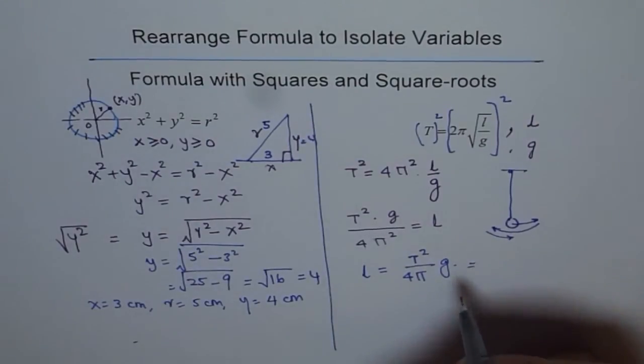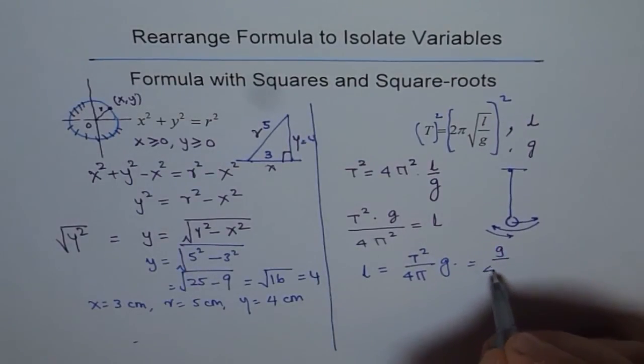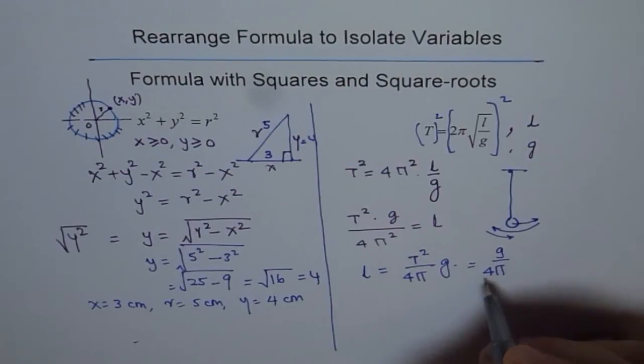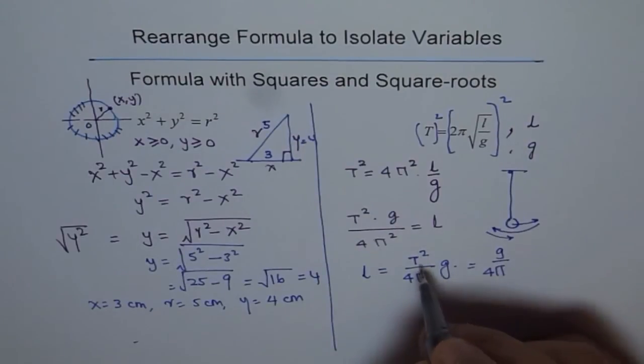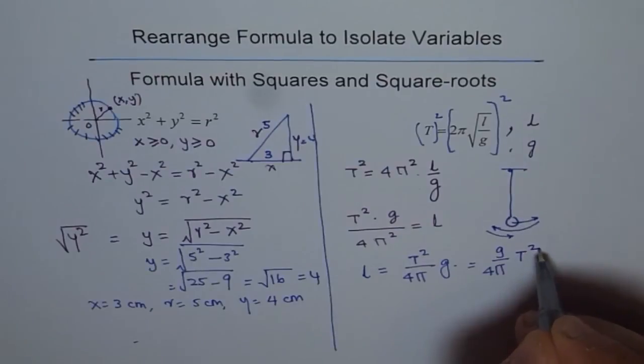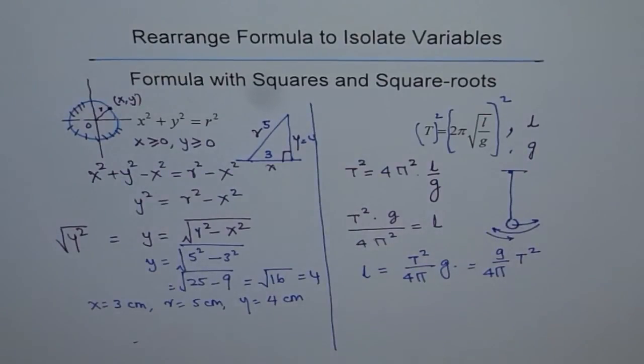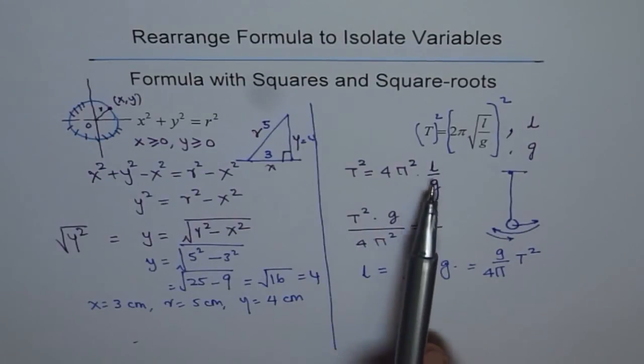A good way to write this formula is l = (g/4π²)T². Since g is constant, 4 is constant, and π is constant, but T could be a variable. Either way, you get the value of length if you know time period. If you know the length, you can find the time period of one oscillation.